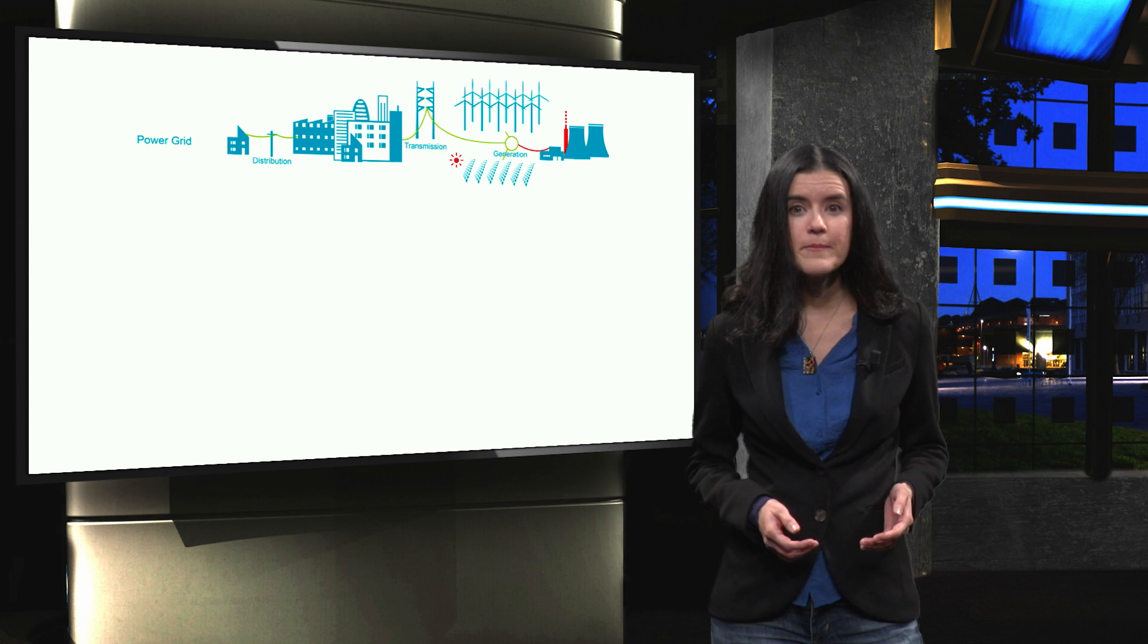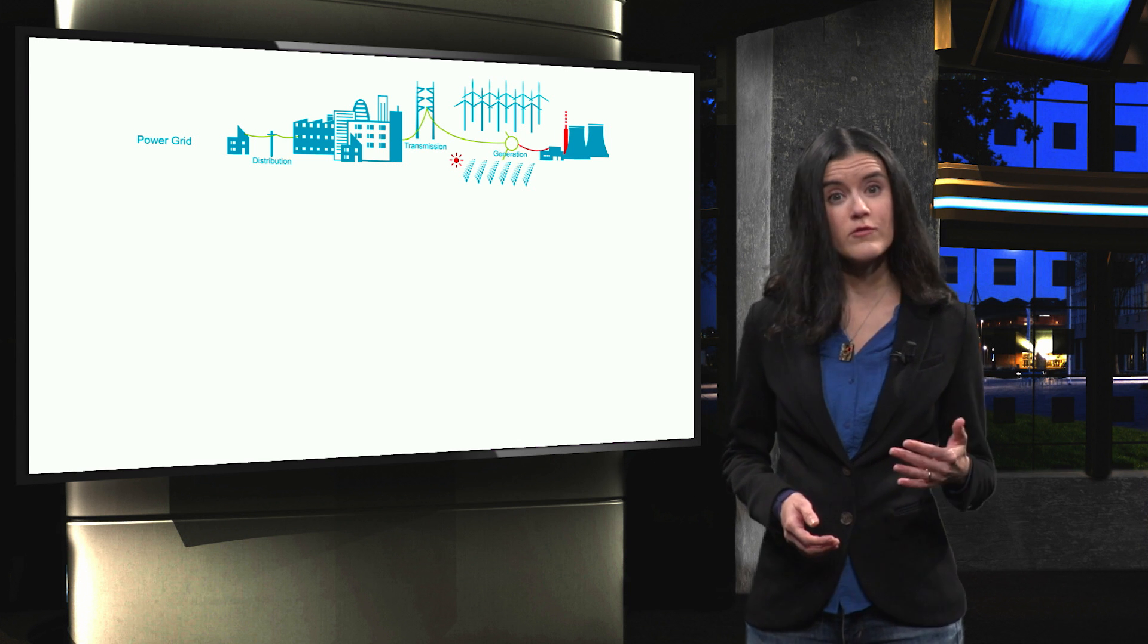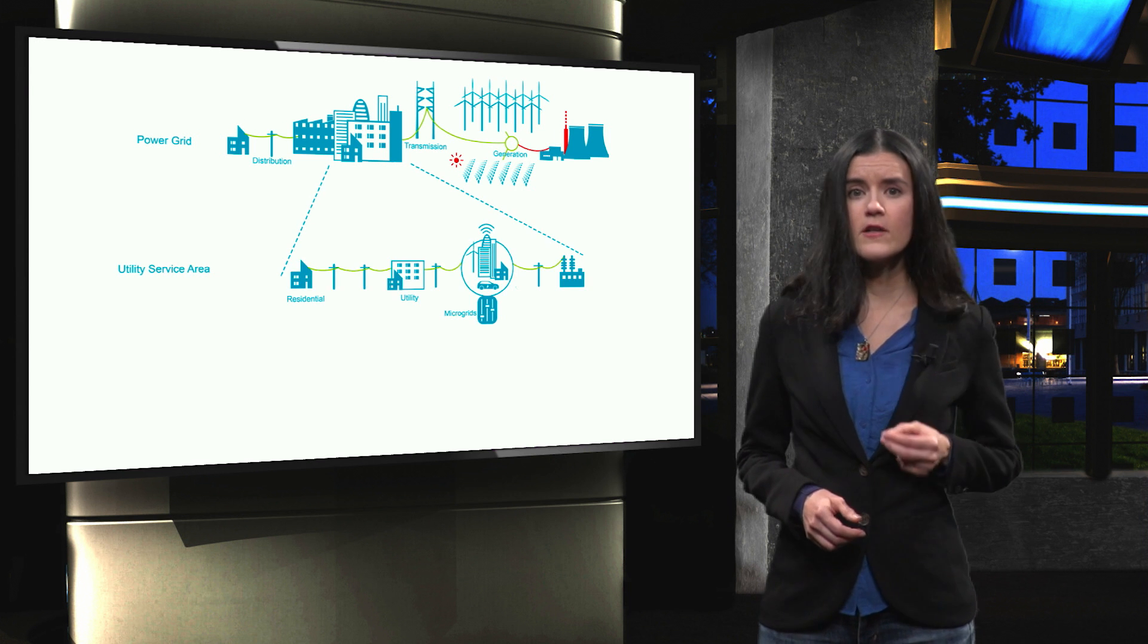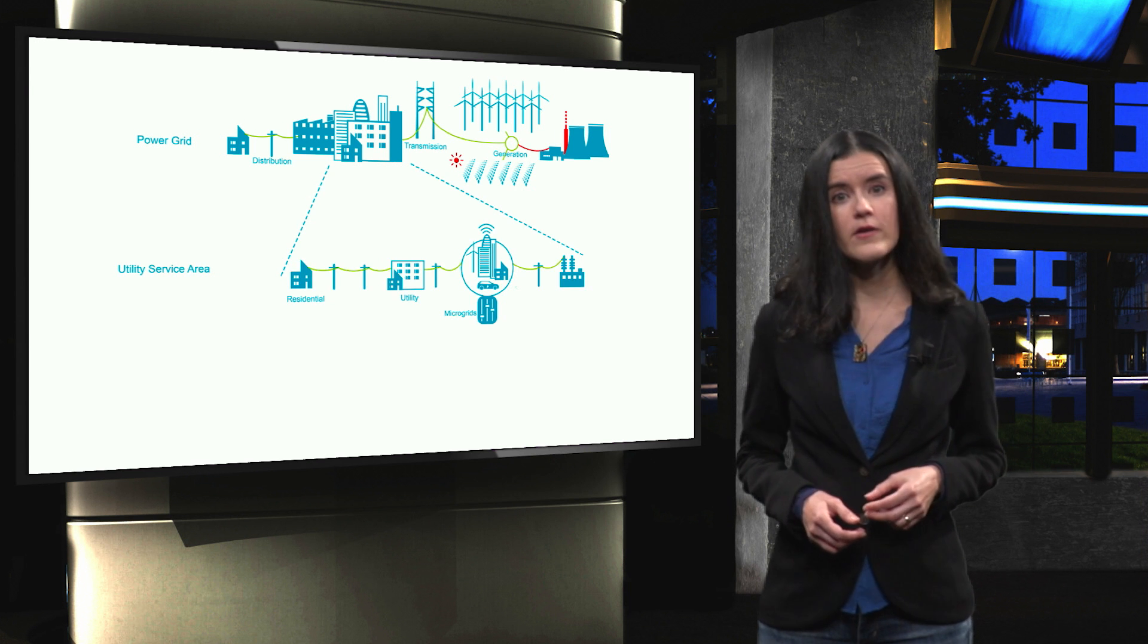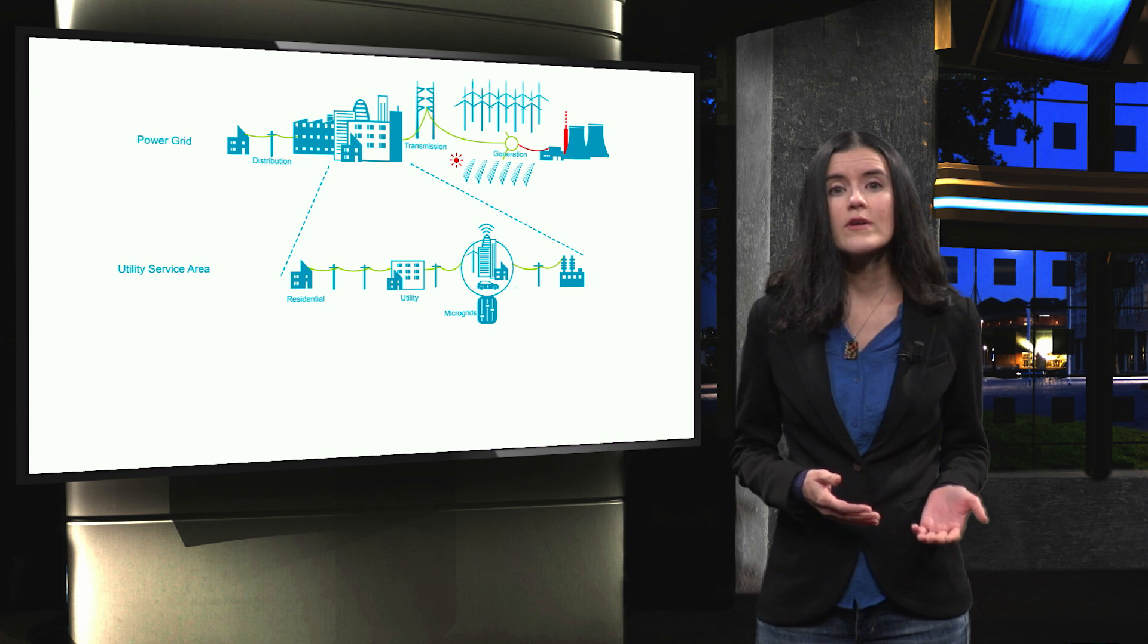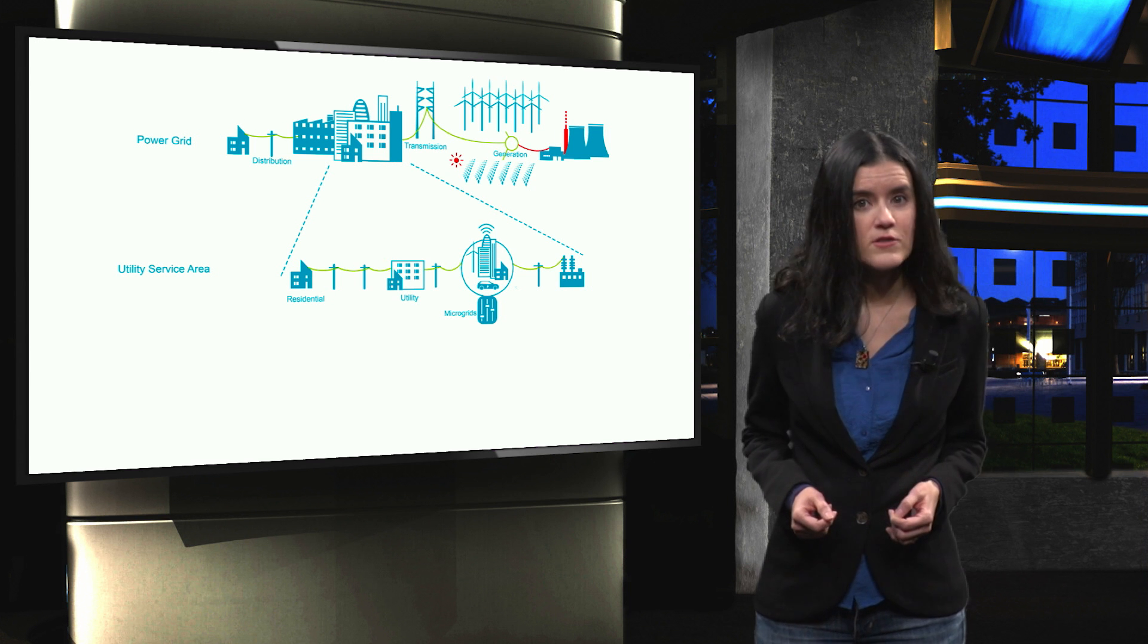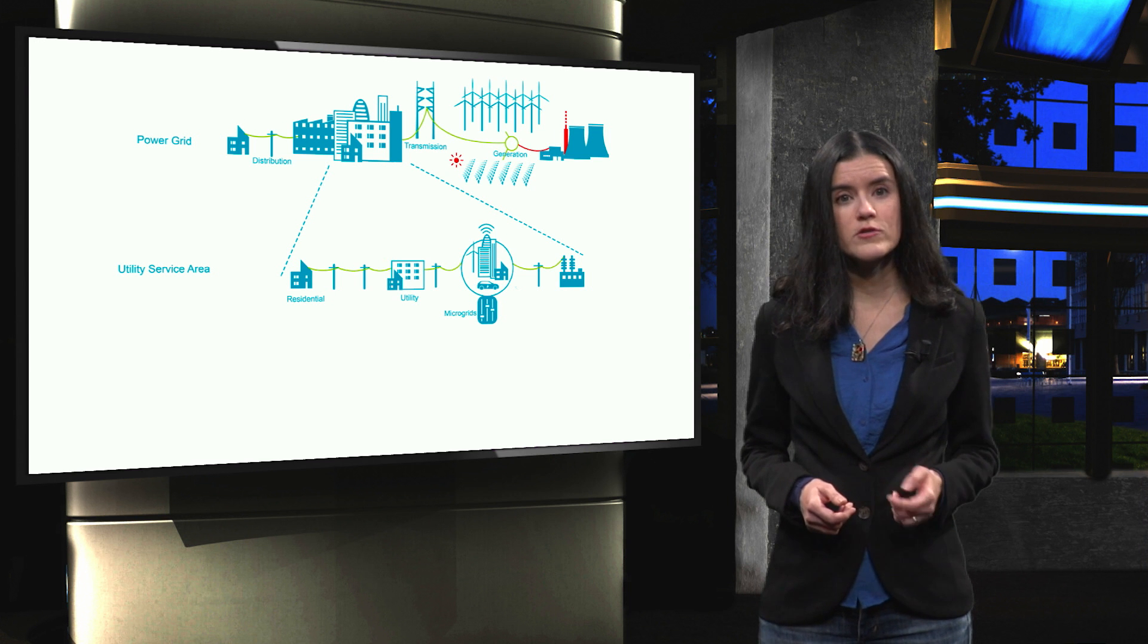Then, the generated power is transferred through the transmission lines to the loads, generally located at the distribution network. The second layer or intermediate layer within the distribution network is defined as utility service area, which may include various residential, industrial or commercial regions.